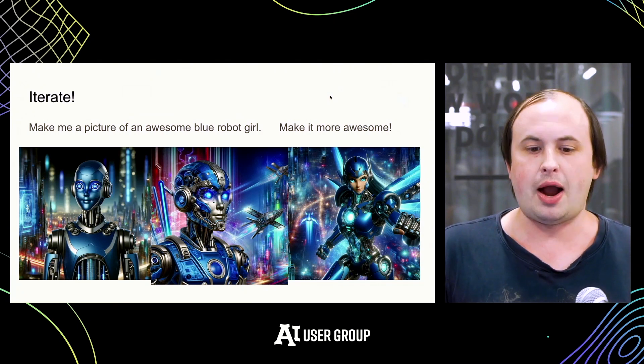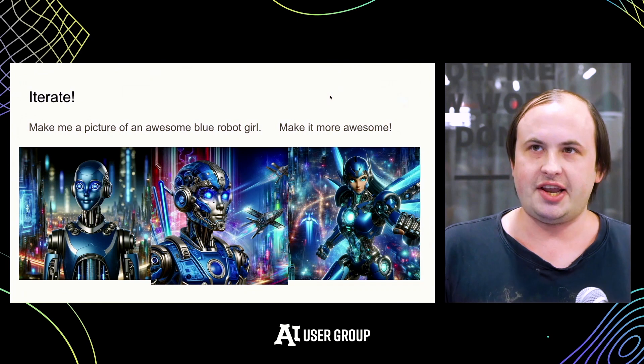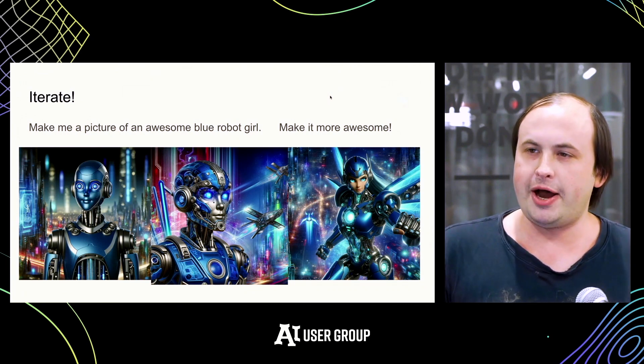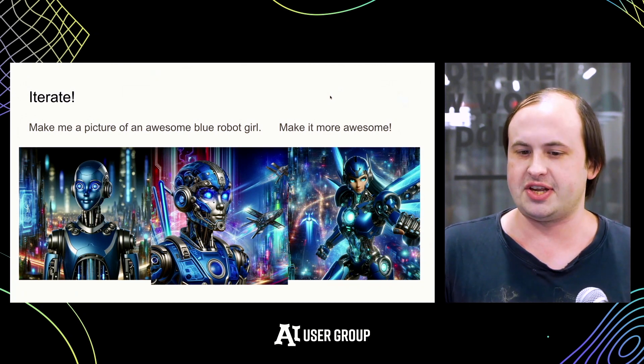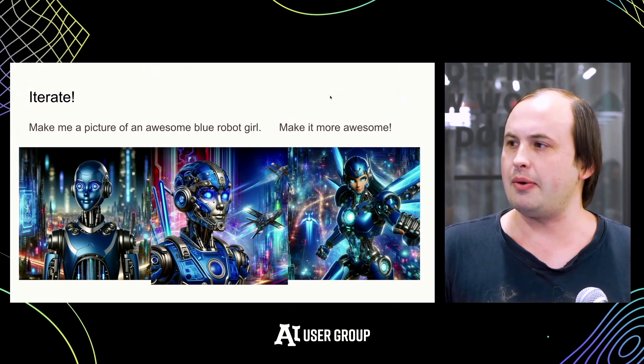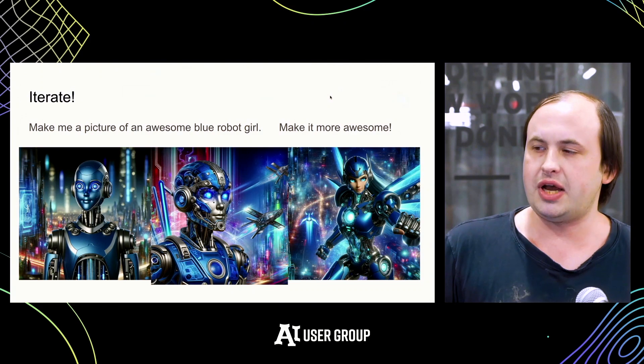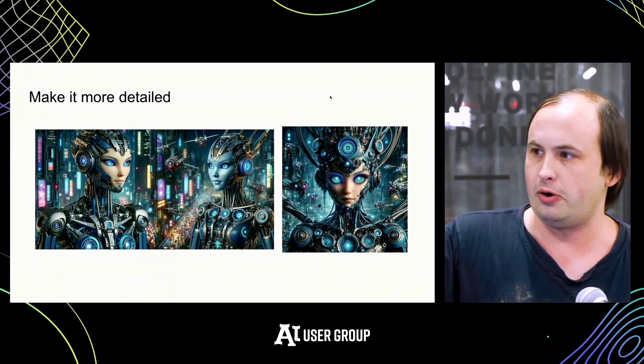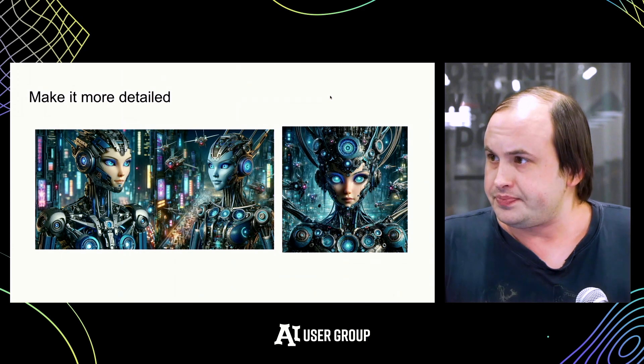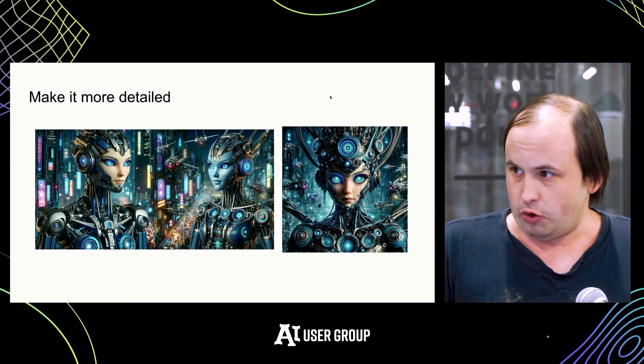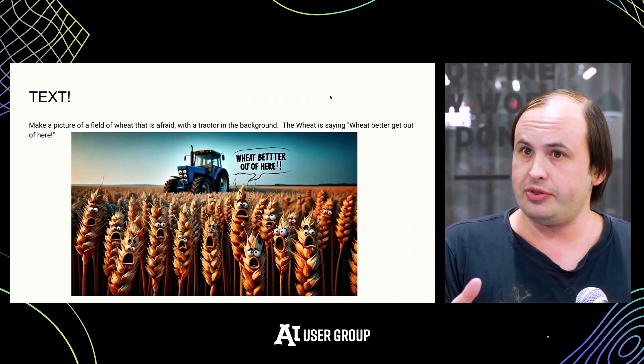With normal prompt engineering, you might say 'I want an image that is awesome level 1000,' but what's the difference between awesome level 1000 versus a million? There's not really a way to prompt engineer that. With DALL-E 3, I said 'make the previous picture more awesome' and it just made the image more awesome. You can also say 'make it more detailed' — here's an example where I told it to make the robot more detailed and it just became more detailed.